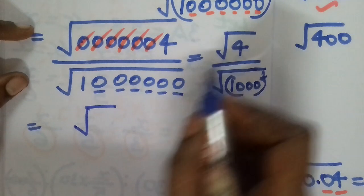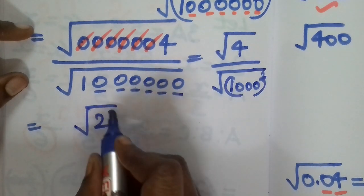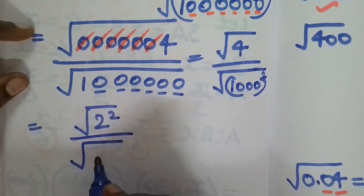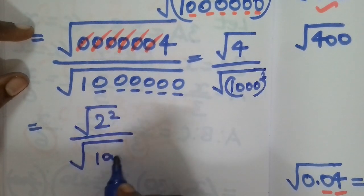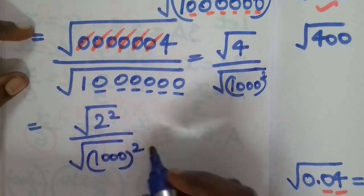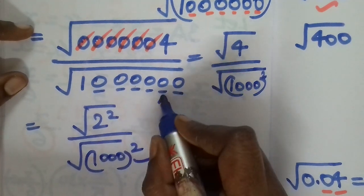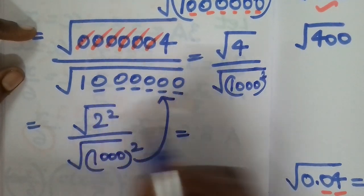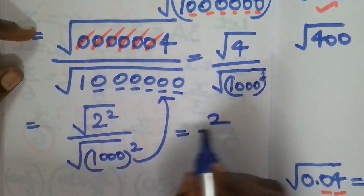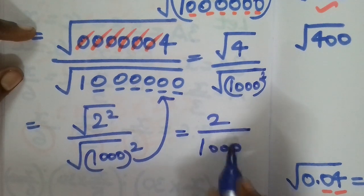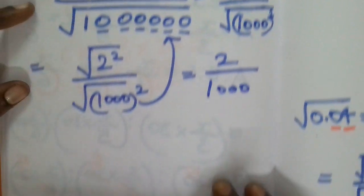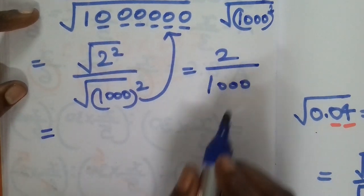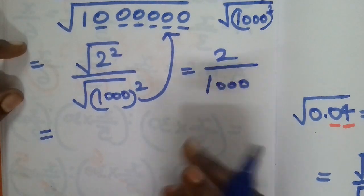Root of 4 is equal to 2 squared, root of 1,000,000 is 1,000 squared. So this equals 2 by 1,000.